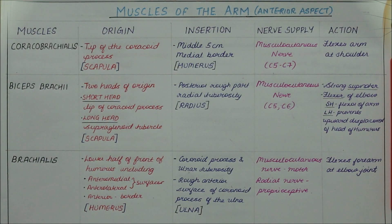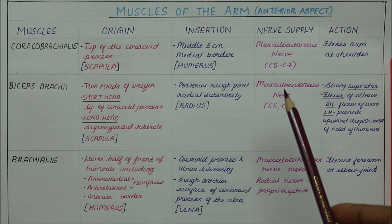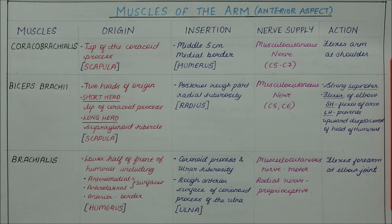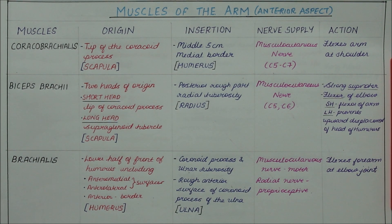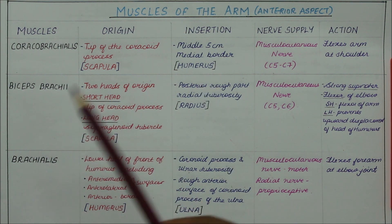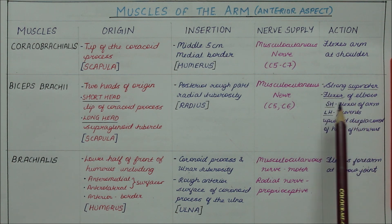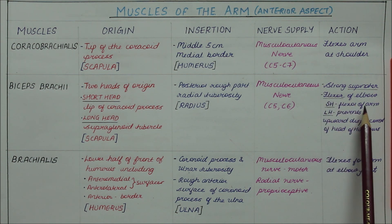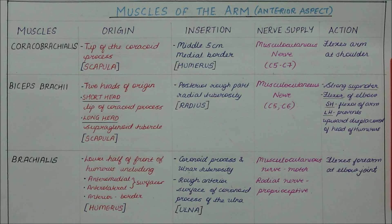The biceps brachii is supplied by the musculocutaneous nerve. Moving on to its action, the biceps brachii is a strong supinator and flexor of the elbow. The short head is the flexor of the arm, while the long head prevents the upward displacement of the head of the humerus.